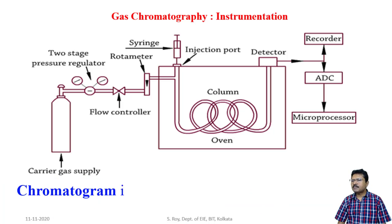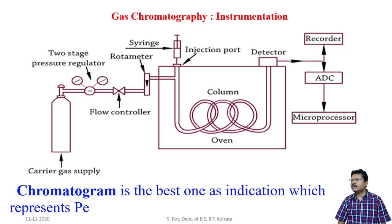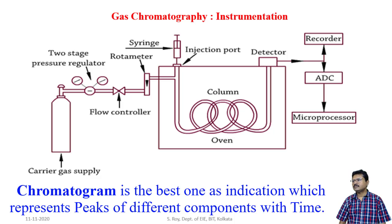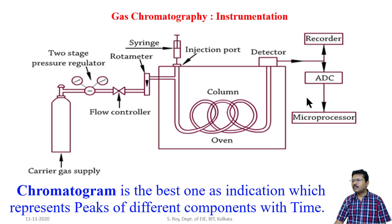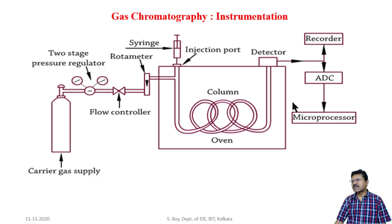The chromatogram is the best indication, representing peaks of different components with time. The detector output is the input of the recorder for recording and displaying. That output may also be input to a microprocessor or computer for further processing. By any means, we can get the chromatogram, which is the ultimate indication of the different components present in the mixture.